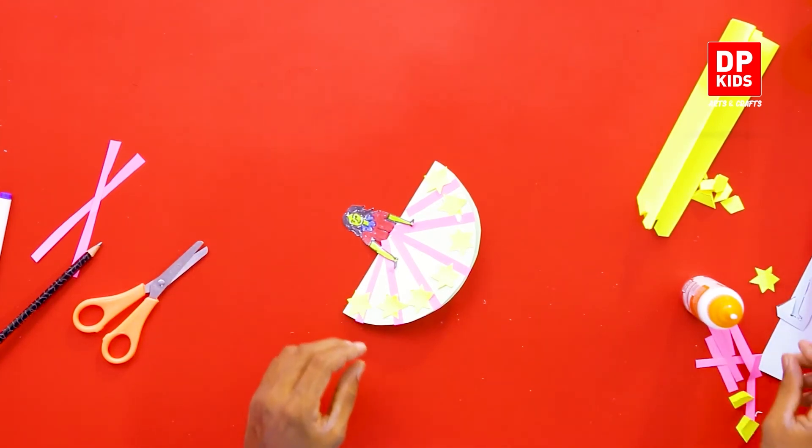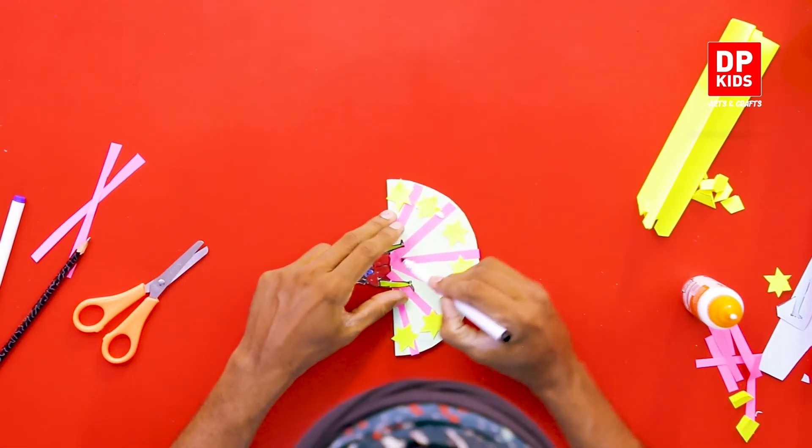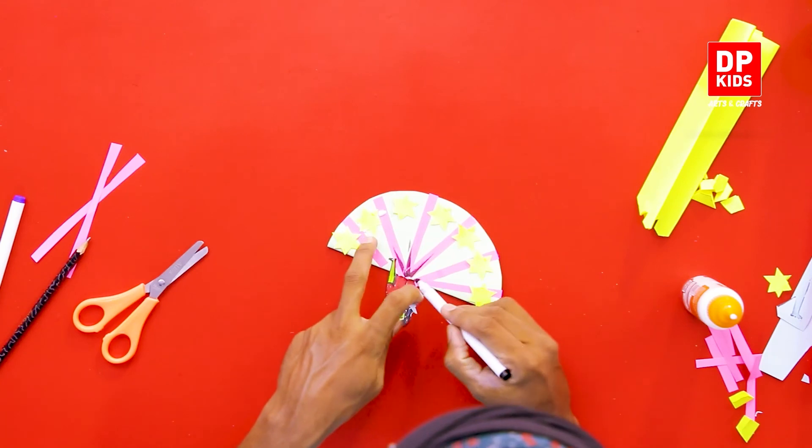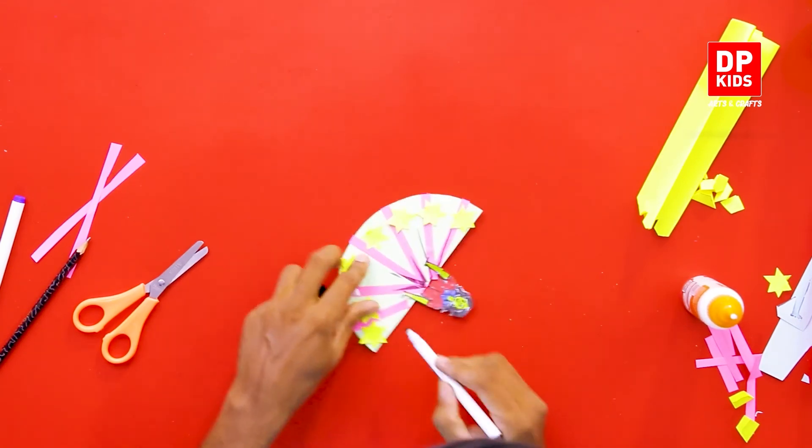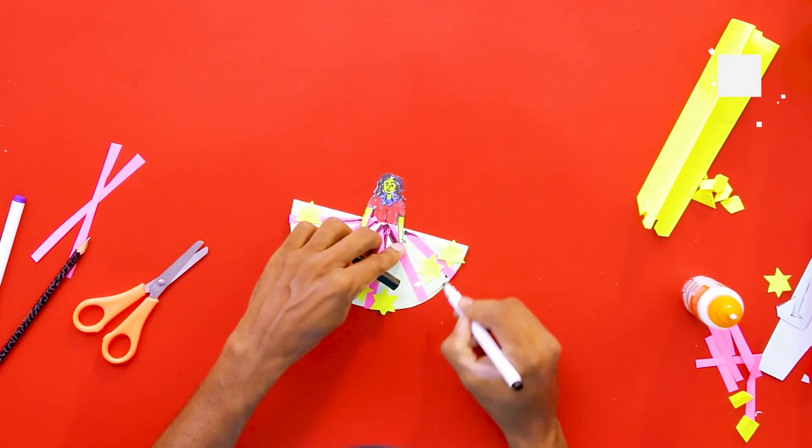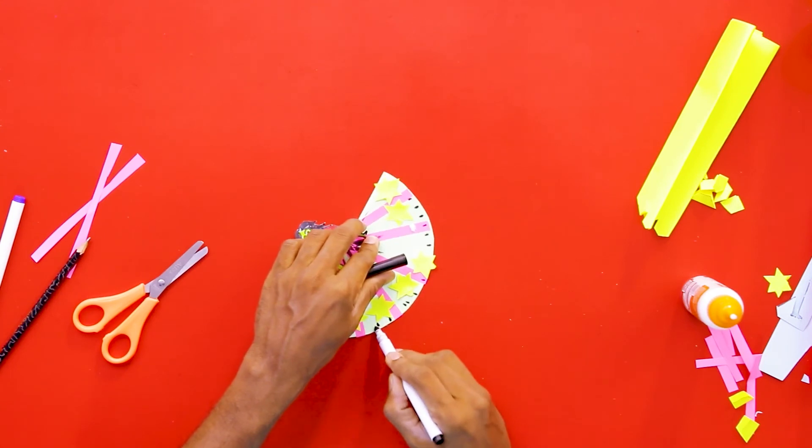All right, okay, now these are all pasted. Now we'll try to put some more strips using a plastic. Now this is a doll that's dancing with a big frock, a beautiful big frock.